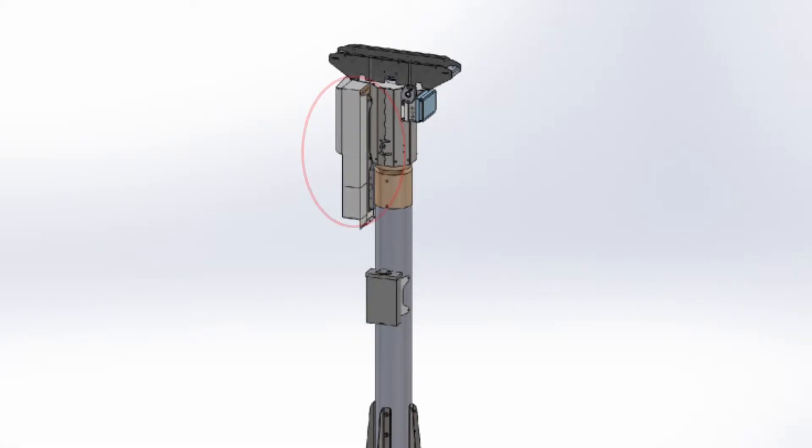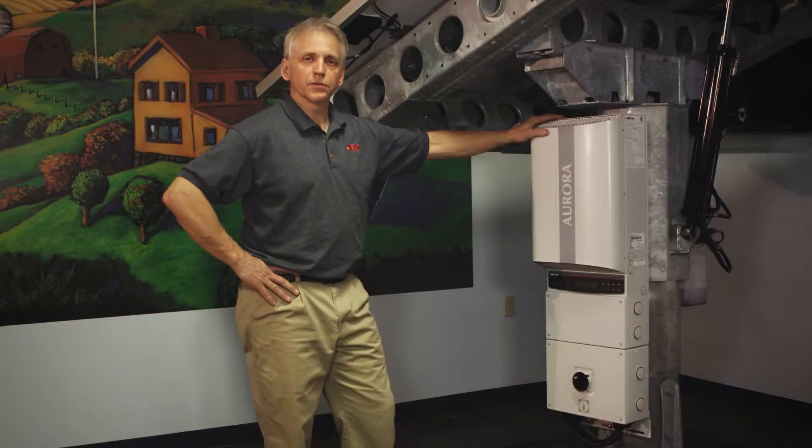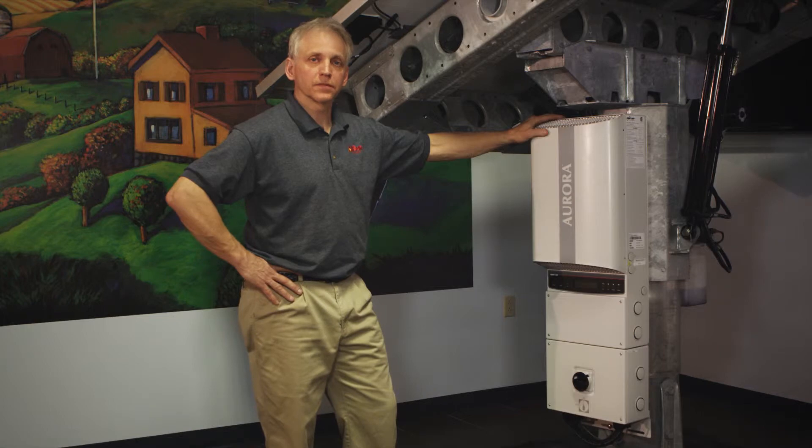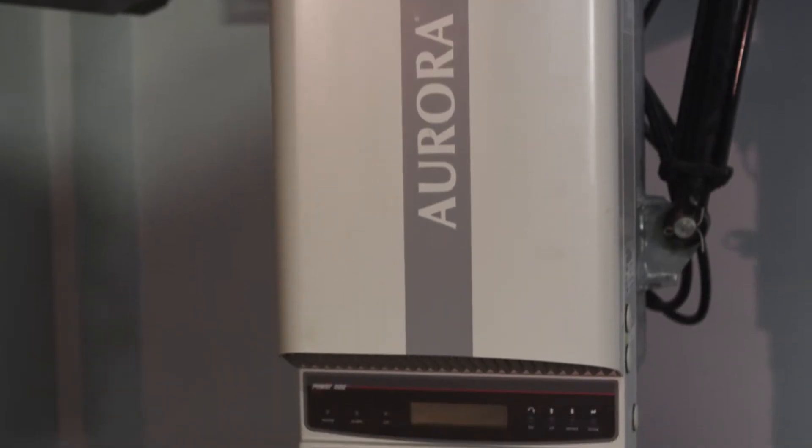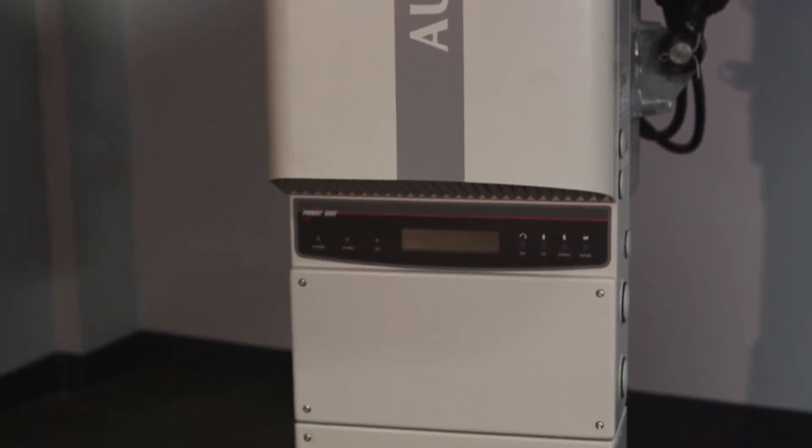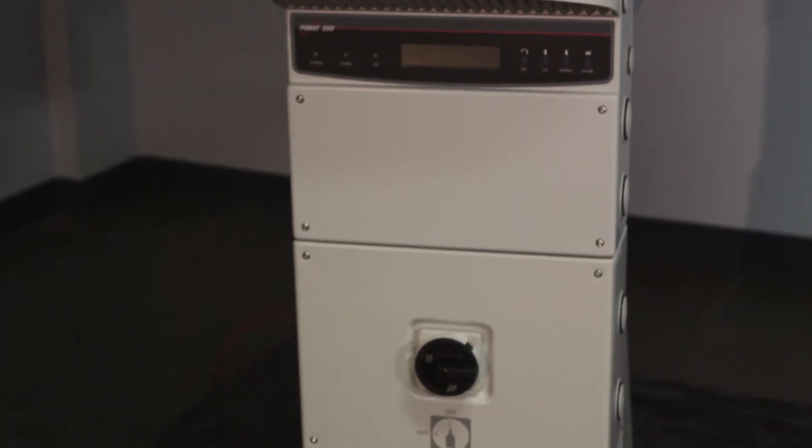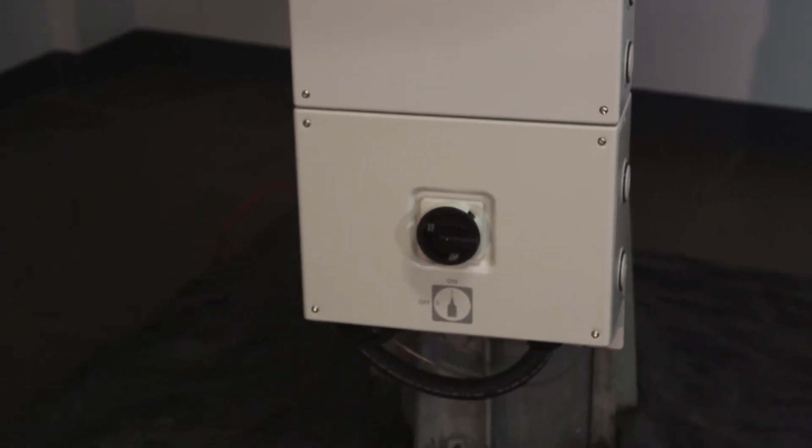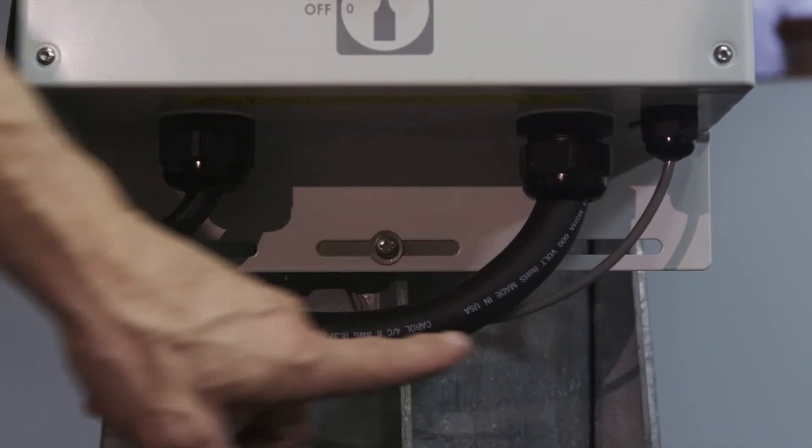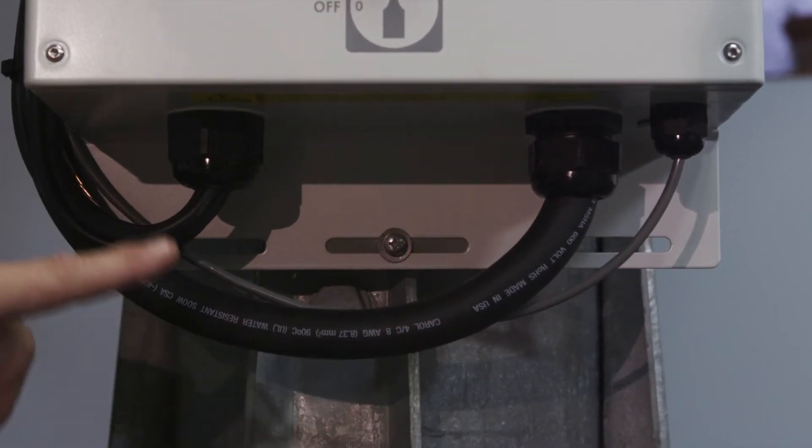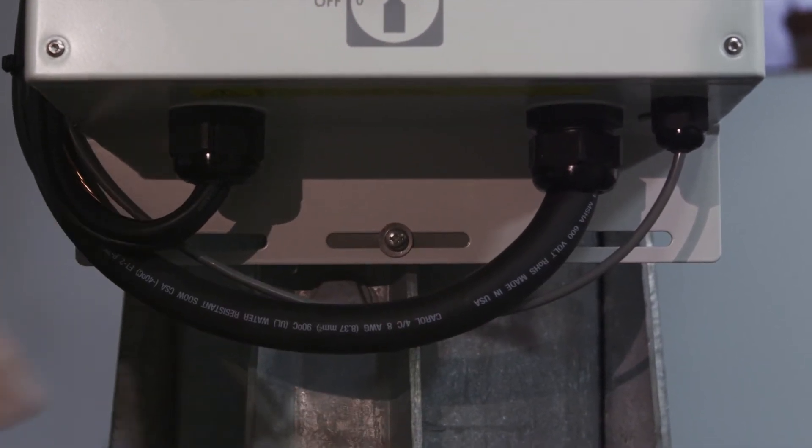The Power One inverter you see here is one of the inverters that is compatible with the bracket provided with the All Sun tracker system. The inverter is made up of two parts: the inverter on the top and the DC disconnect on the bottom. From the DC disconnect comes the communications cable, the SO cable providing power to the inverter, and the PV leads coming from the array.